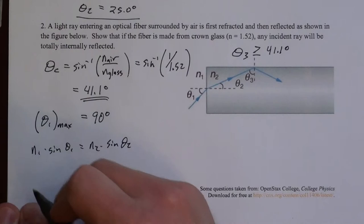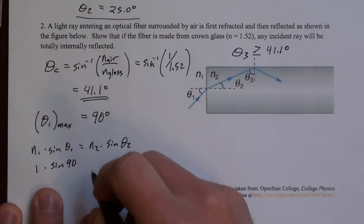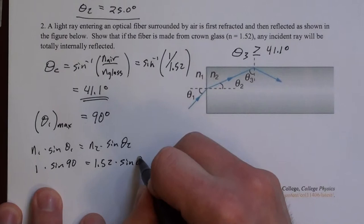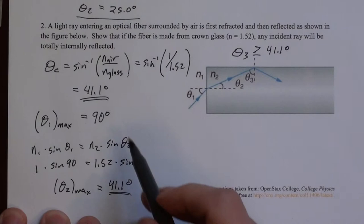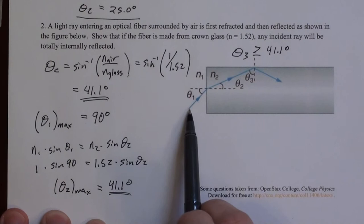So n1 sine theta 1 equals n2 sine theta 2. On the left-hand side I have 1 for air, sine of 90 degrees, we're putting n theta max here. n2 is 1.52. And sine theta 2, where I'm finding theta 2 max here. So if you do that math, theta 2 maximum turns out to be 41.1 degrees. Well, hey, that's our critical angle. Well, that makes sense because that's how we find a critical angle. We're just tracing the ray the other direction.